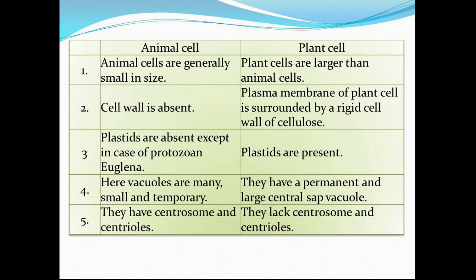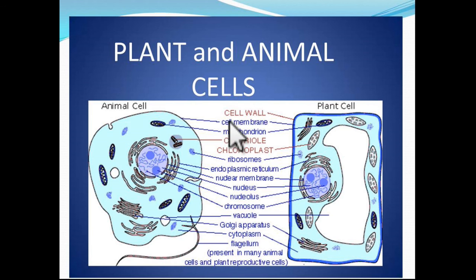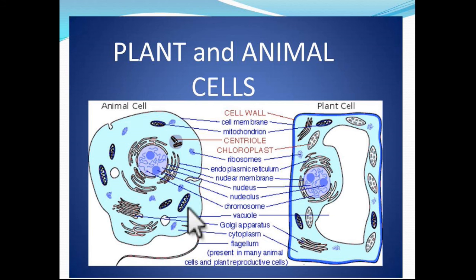Looking at the diagram of the animal and plant cell, all those highlighted in red color are present only in one kind of cell. Cell wall is present in plant cell only, not in animal cell. Centriole is present only in animal cell. Chloroplast is present only in plant cell. Cell membrane, mitochondria, ribosomes, endoplasmic reticulum, nuclear membrane, nucleus, chromosomes, Golgi apparatus, and cytoplasm are present in both. Vacuoles are small in animal cell and large in plant cell. Flagellum is present in animal cell and in some plant reproductive cells, but not in all plant cells.